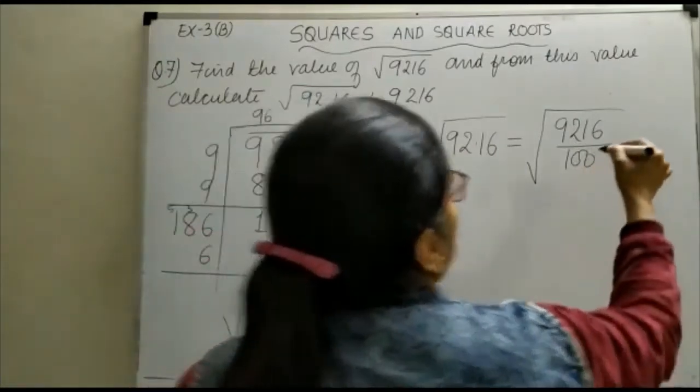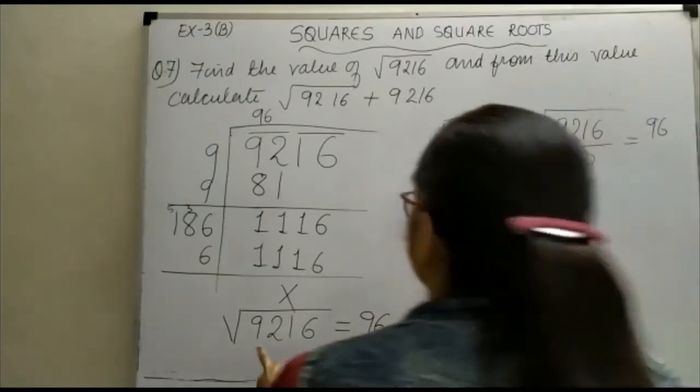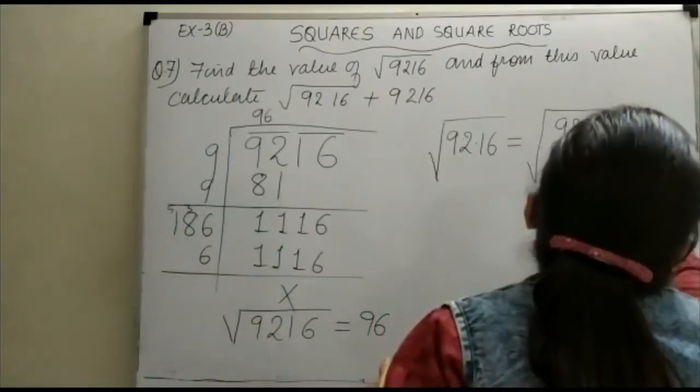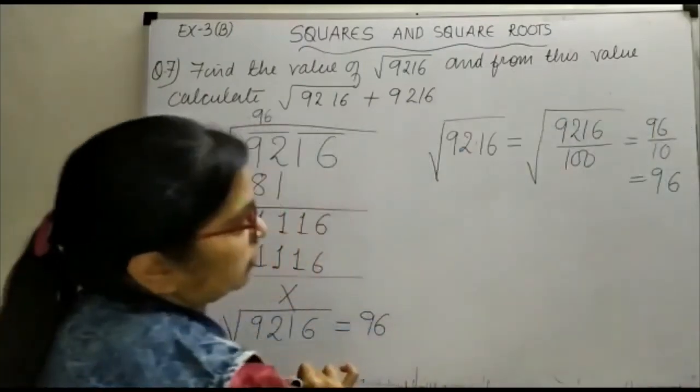This can be written as 96/10, because we have already found the square root is 96, and this value is equal to 9.6.